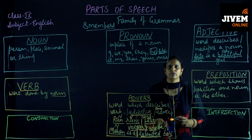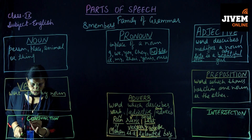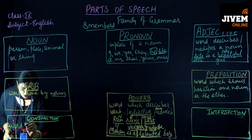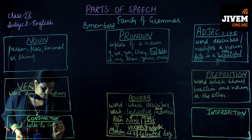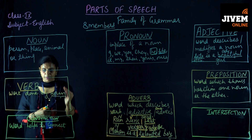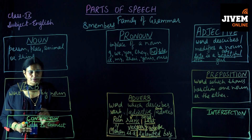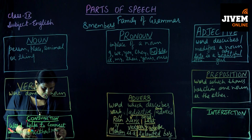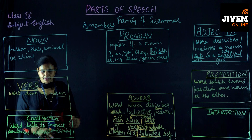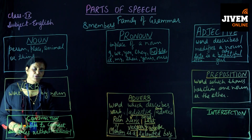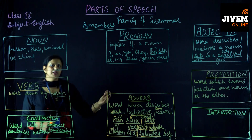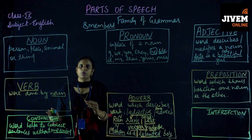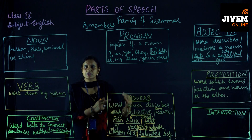Next is conjunction — another important member of grammar. Conjunction is a word which helps us to connect two different sentences. The most important thing is that a conjunction connects two sentences without changing the meaning. Many conjunctions are there: and, yet, but, either/or, neither/nor. For example: 'Ram is a good boy, Sham is a good boy' — we can combine these using a conjunction.